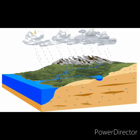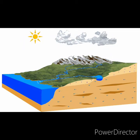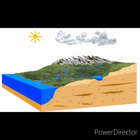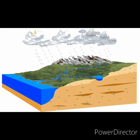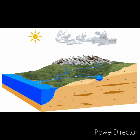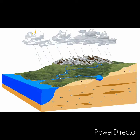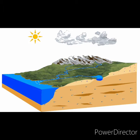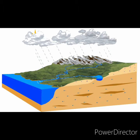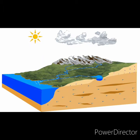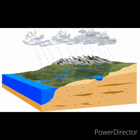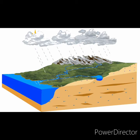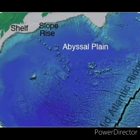Next, continental rise. At the base of the continental slope is a gently sloping layer of sediments which merge into the deep sea floor. This underwater feature found between the continental slope and abyssal plains is called the continental rise. It consists of submarine fans which are similar to the alluvial fans found on land.